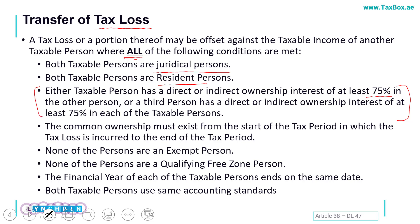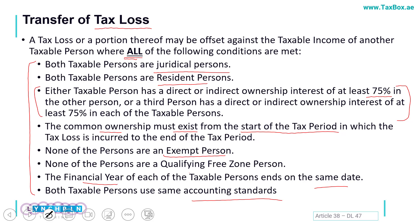The important point is that the common ownership must exist from the start of the tax period in which we intend to claim it. This means that if we have just acquired a company mid-year, even if we hold 75% of the shares, we still cannot claim the tax losses — it has to be from the start of the year. Additionally, neither person should be exempt, neither should be a qualifying free zone person, their financial year must end on the same date, and their accounting standards must also be the same. If all these conditions are fulfilled, the tax loss of company A can be adjusted against the taxable income of company B, subject to the 75% rule explained earlier.